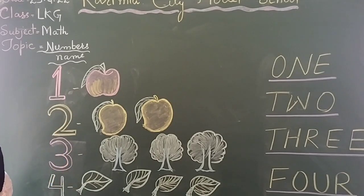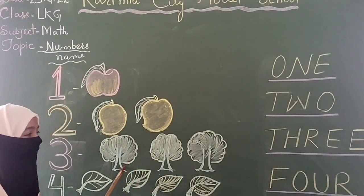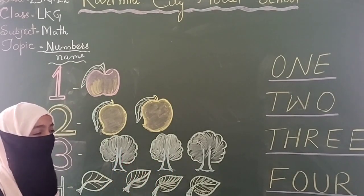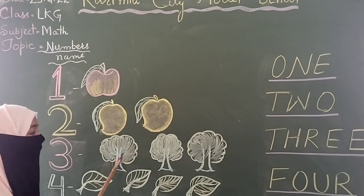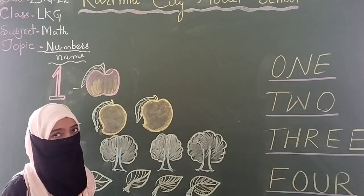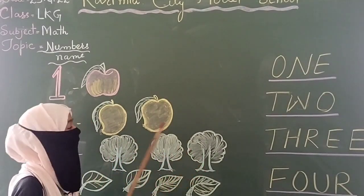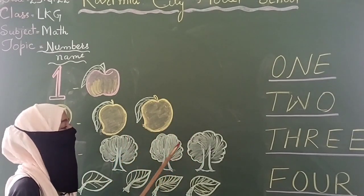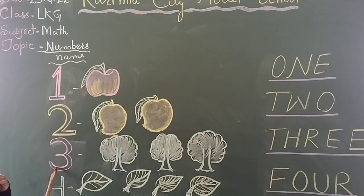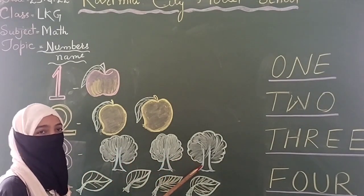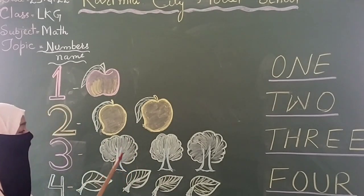Next, what's written here? This is a tree. How many trees are there? Let's count: one, two, and three. Now see — this is a three, and how many trees are there? There are three trees: one, two, and three.